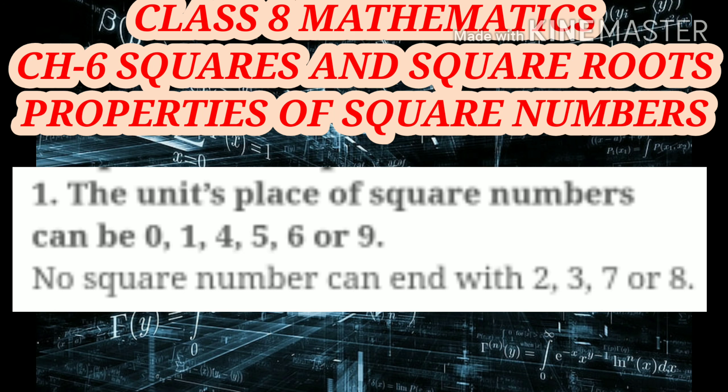The first property of square numbers is the unit places of square numbers can be 0, 1, 4, 5, 6 or 9. No square number can end with 2, 3, 7 or 8.